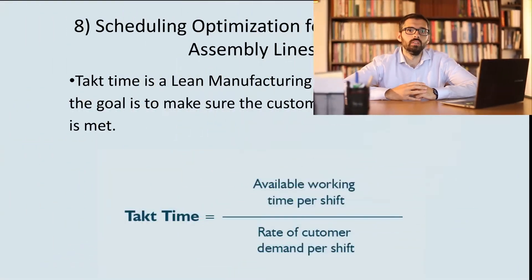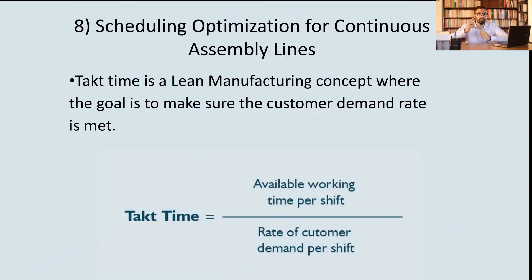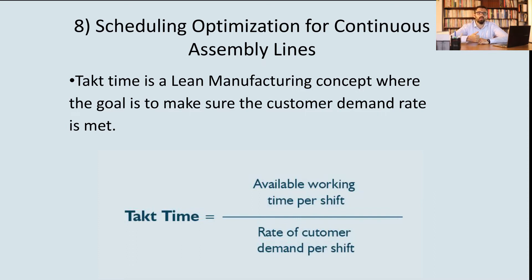So what is Takt Time? Takt Time is the division of all available net working time that you have per shift. For example, you may have 480 minutes per one shift, which is eight hours. When you exclude lunch times and plant maintenance, you get the net working time divided by the customer demand.